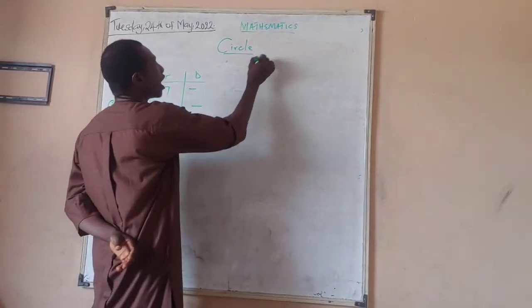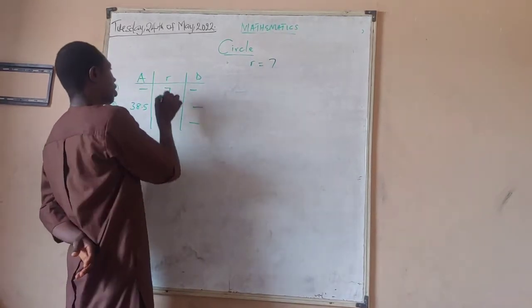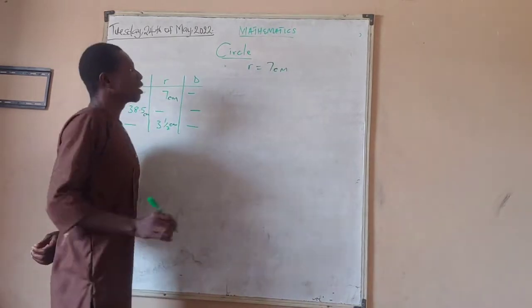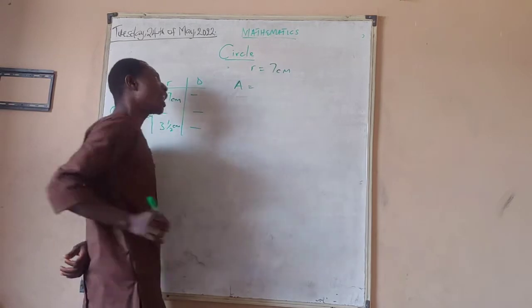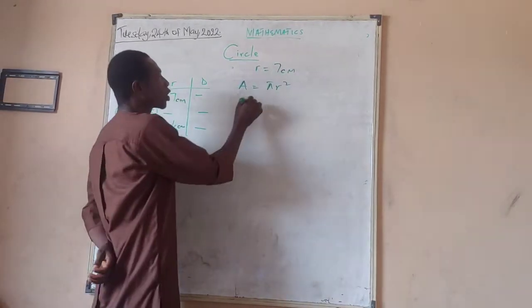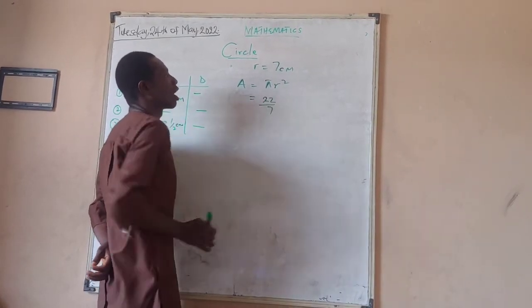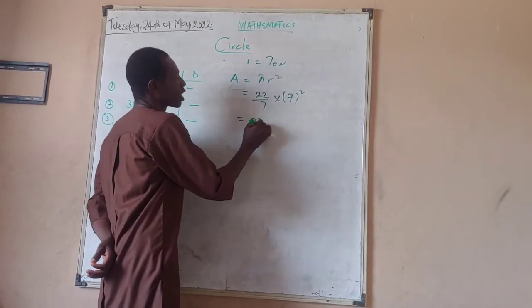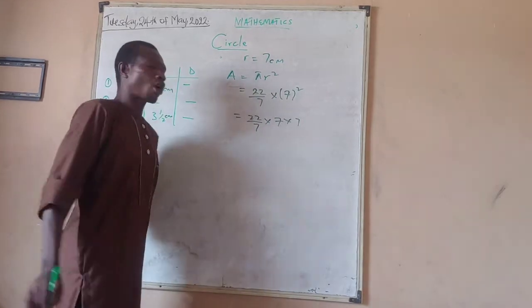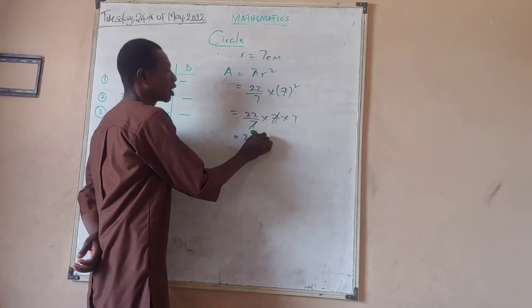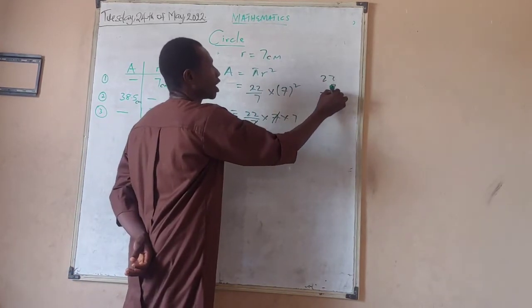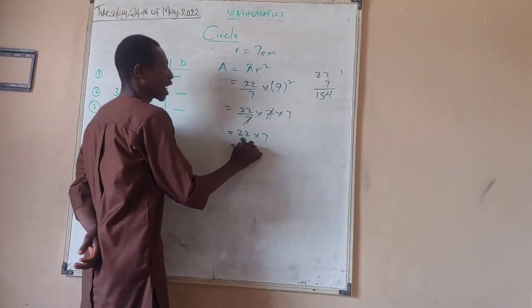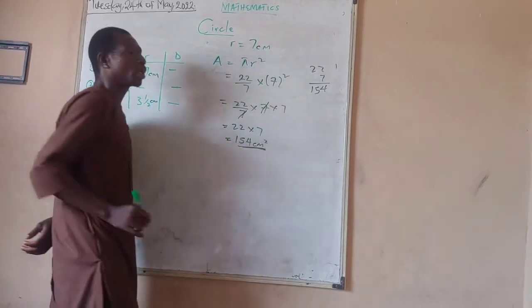Where r equals 7 centimeters, the area of the circle would be pi r squared. Slot in your pi, which is 22 over 7, and your r is 7. So you slot in 7 squared. This means 22 over 7 times 7 times 7, of which one 7 will cancel the other 7. So you are left with 22 times 7. Now, 22 times 7: 2 times 7 is 14, carry 1; 2 times 7 is another 14 plus 1 makes 15. So I have my 154 centimeters squared.